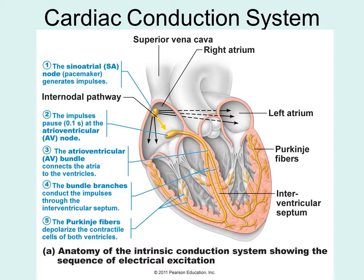The conduction system continues branching into what is known as the Purkinje fibers. So the impulse starts at the SA node, then comes down and stimulates the AV node, then travels through the AV bundle, the bundle branches, and finally the Purkinje fibers. This allows the atria to contract together as a unit, and then the ventricles contract as a single unit, resulting in much more efficient pumping.